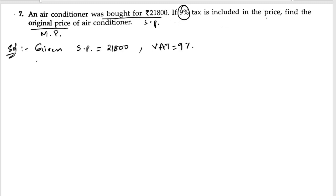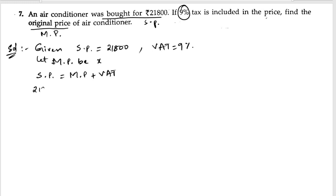To find the original price, first of all we will let the marked price be x. So selling price is equals to marked price plus VAT. Selling price is already given, so let us write down: twenty-one thousand eight hundred is equals to marked price x plus VAT which is nine percent of x.